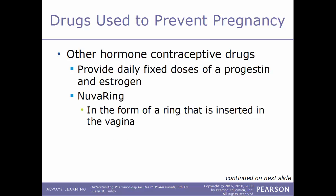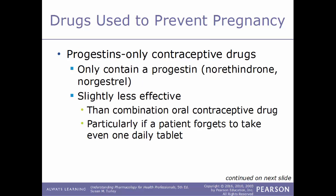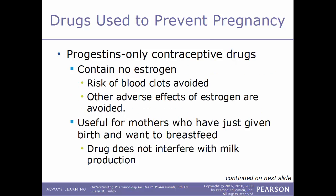Other hormone contraceptives act by providing a fixed dose of progestin and estrogen. One example is the NuvaRing, a ring inserted in the vagina. Another is Ortho Evra, a transdermal patch applied to the skin. Some hormone contraceptive drugs only contain one hormone. Progestin-only contraceptive drugs contain progestins such as norethindrone or norgestrel, and are slightly less effective than combination drugs — even more so if a patient forgets a daily tablet. Because these drugs contain no estrogen, the risk of blood clots and other estrogen-related adverse effects is avoided. They are also useful for breastfeeding mothers since the drug does not interfere with milk production.